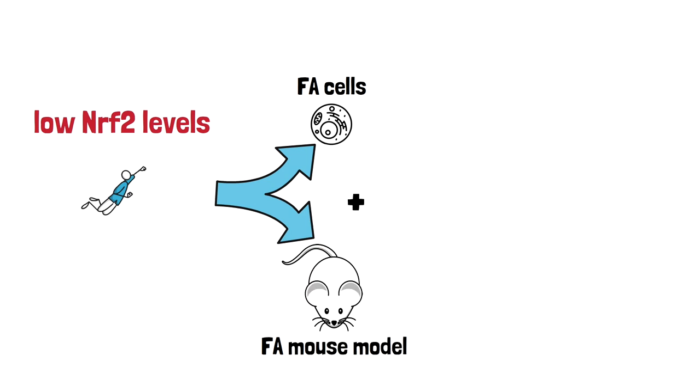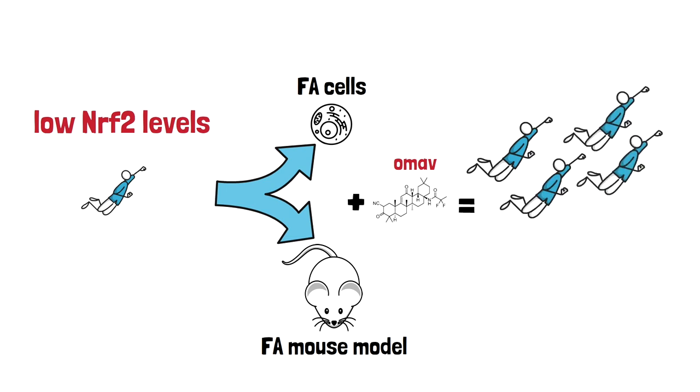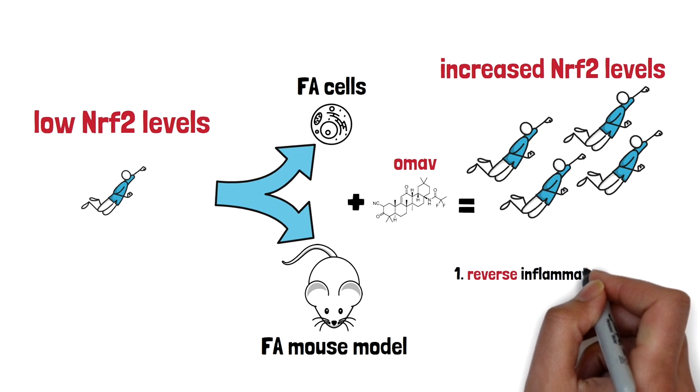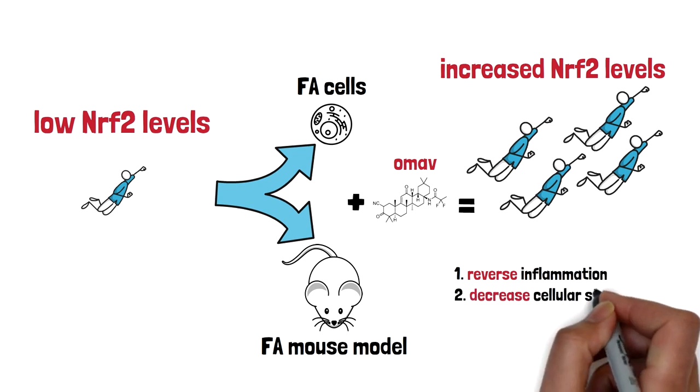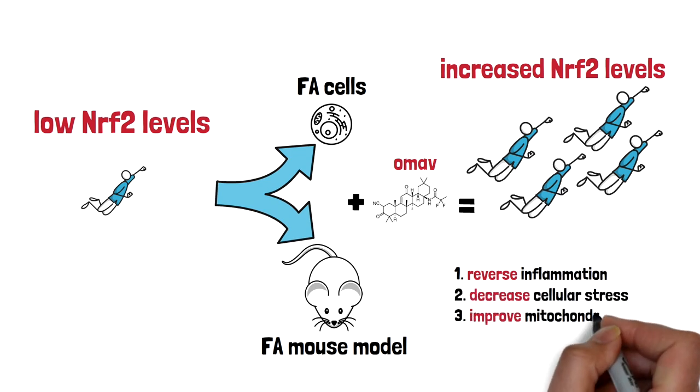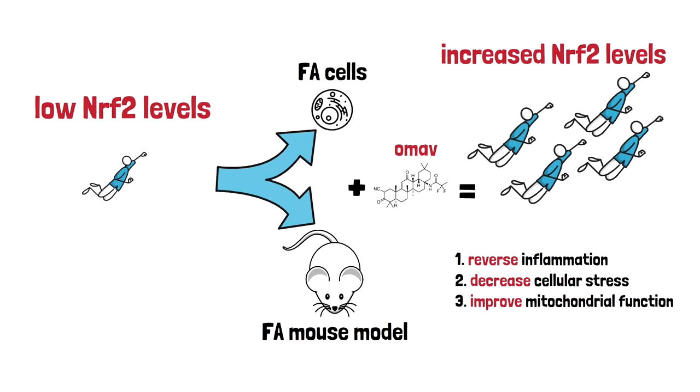In both FA cells and animals, the increase in NRF2 levels after OMAV administration is enough to reverse some of the inflammation, decrease the cellular stress due to low frataxin, and improve mitochondrial energy production.